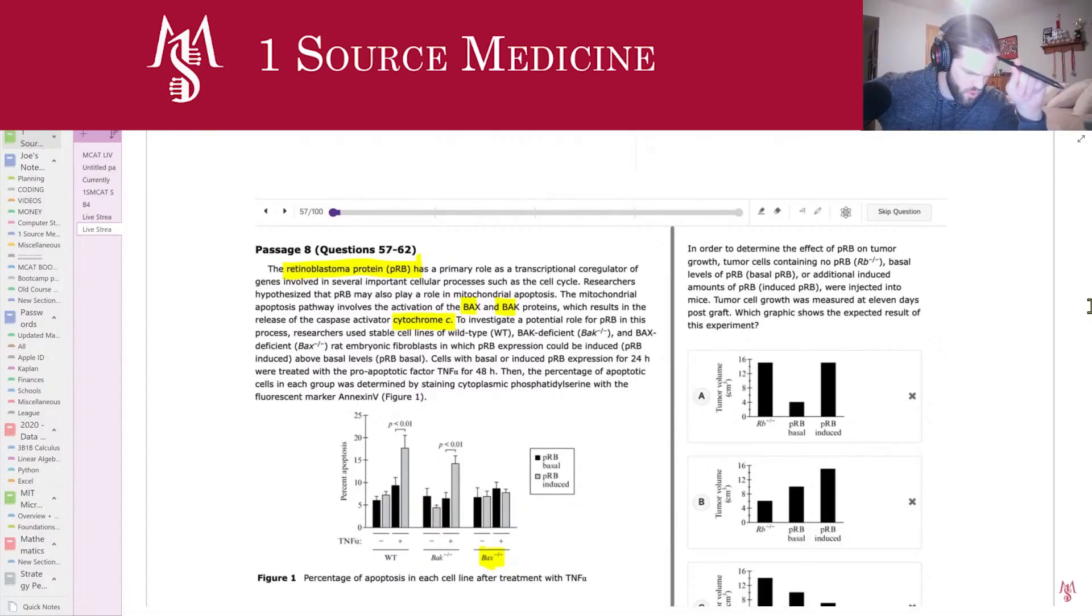Alright, so it says, in order to determine the effect of PRB on tumor growth, tumor cells containing no PRB (RB negative), basal levels of PRB, or additional amounts of PRB (induced PRB) were injected into mice. Tumor cell growth was measured at 11 days post-graft. Which graphic shows the expected result of this experiment?